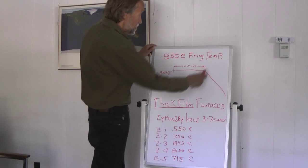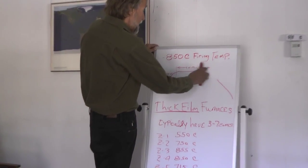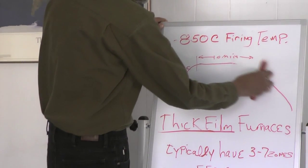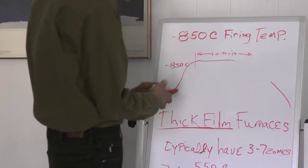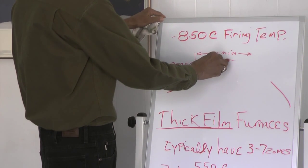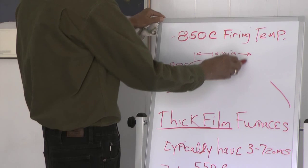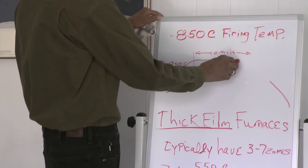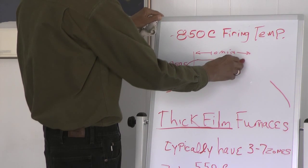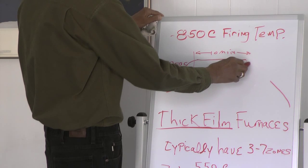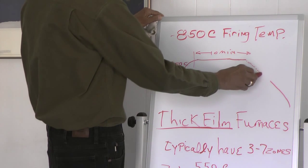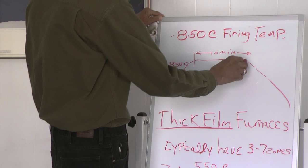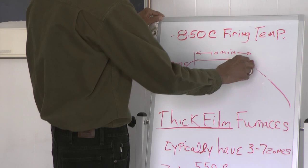So with a set point of 715 in zone 5 you're going to have now a cooling section, initial cooling section that's going to look a little different. It's going to start a little sooner and it's going to cool a little slower and the advantage of that is that this initial slow cooling is going to...